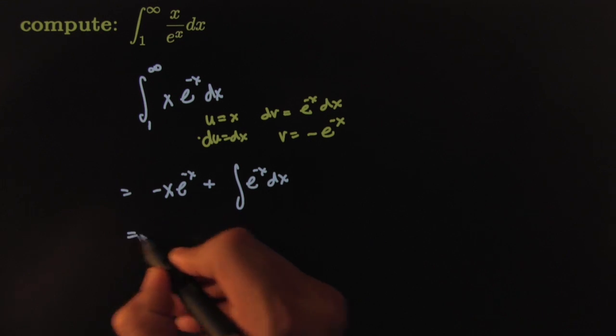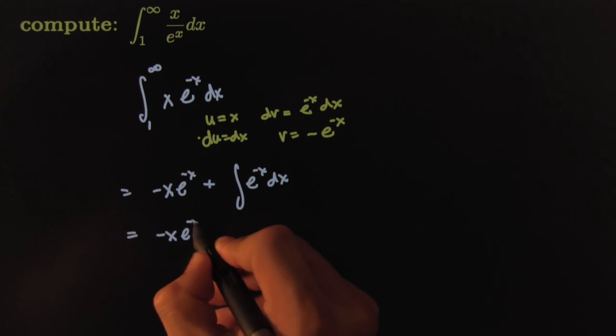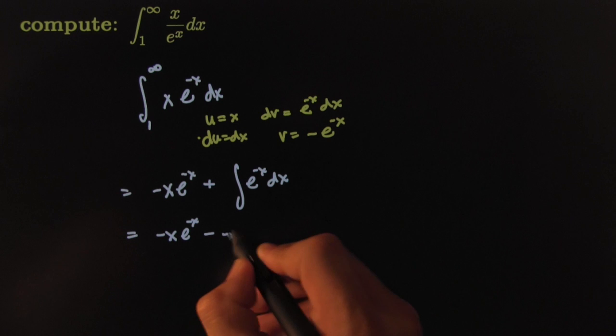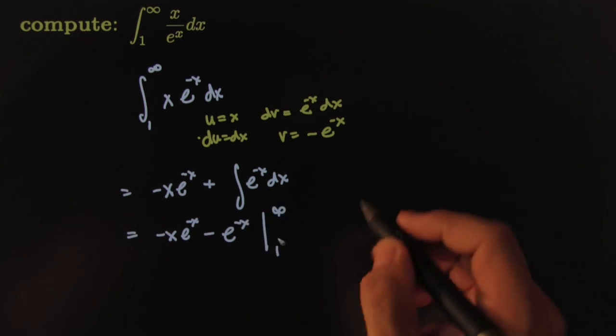This integral is rather harmless. Negative x, e to the negative x, minus e to the negative x. And I'm going from infinity to 1.